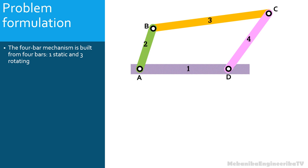In order to determine the number of unknowns, we need first to determine the mobility of the mechanism. The mobility is required to know how many degrees of freedom are controlled by an external source of energy. There should be as many given displacement parameters as the number of mobility. The mobility is given by the equation: 3 times (L minus 1), minus 2 times J1, minus J2. Where L is the number of links, J1 is the number of lower pairs, and J2 is the number of higher pairs.